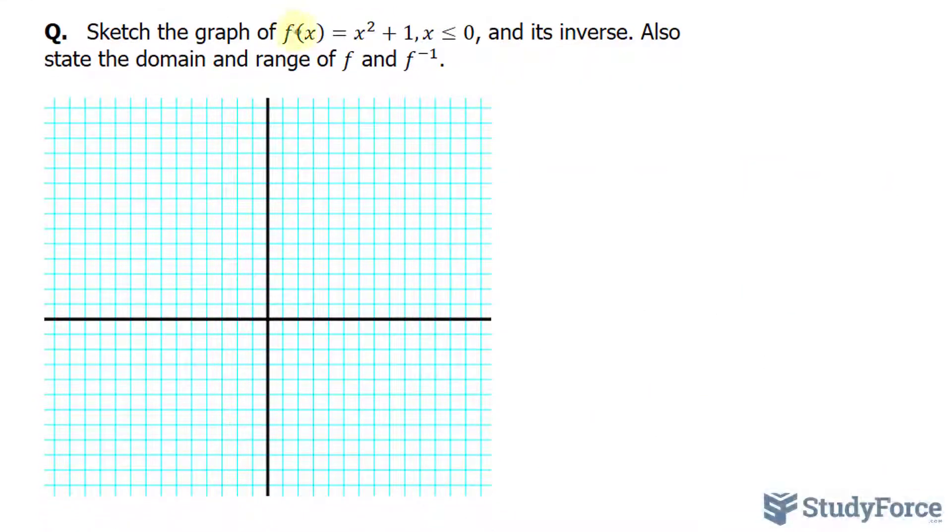We have the function right here, x² + 1. And remember, the function x² is a parabola. If we were to create a table of values and we set x equal to -3, -2, -1, and 0, remember we can't go beyond 0, we would end up with the outputs 9, 4, 1, and 0. So let's go ahead and plot this really quickly.